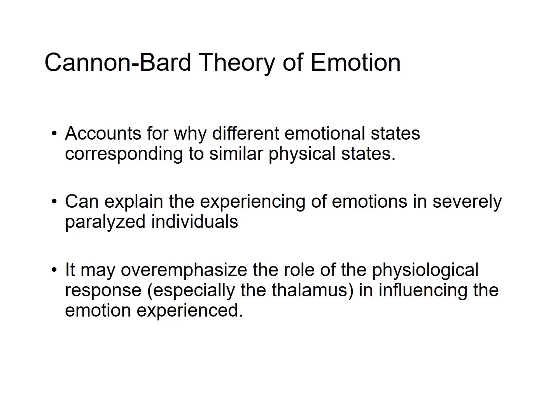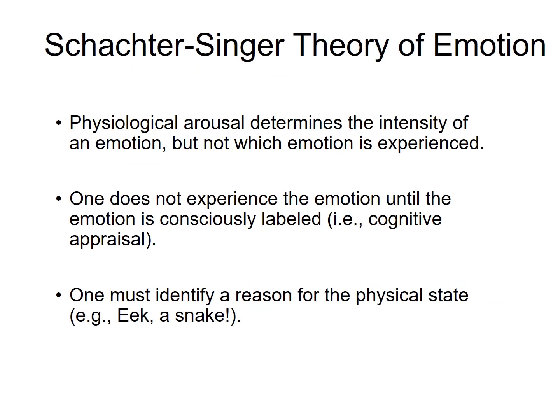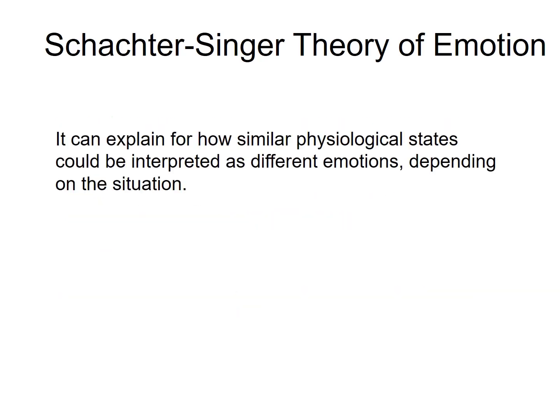The Schachter-Singer theory, the last of the three classical theories, is a little better received than the Cannon-Bard theory. It states that physiological arousal determines the intensity of the emotion but not which emotion is experienced. One does not experience the emotion until it is unconsciously labeled — a cognitive process. One must first identify a reason for a physical state, such as 'there's a snake,' before consciously labeling it as an emotion like fear. The theory can explain how similar physiological states can be interpreted differently depending on the situation.